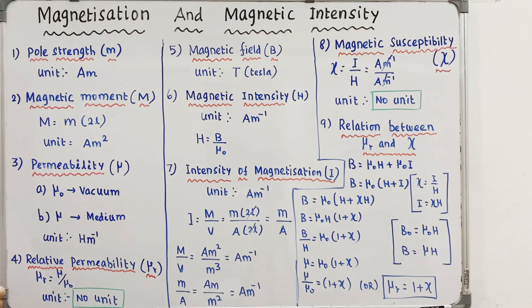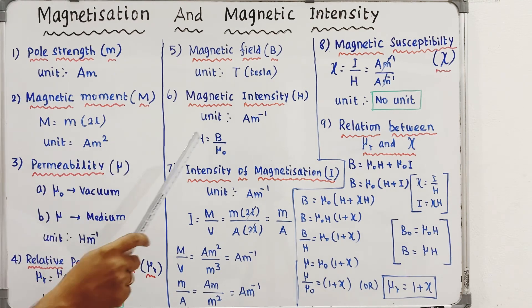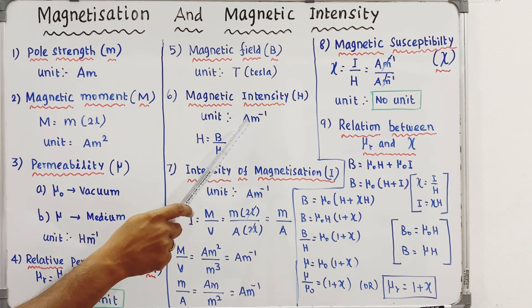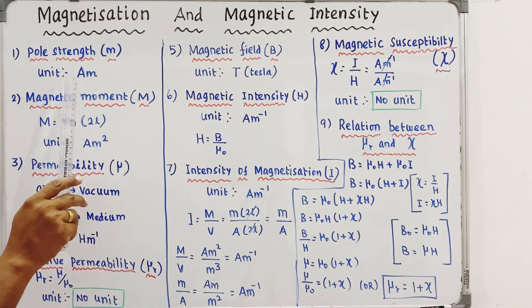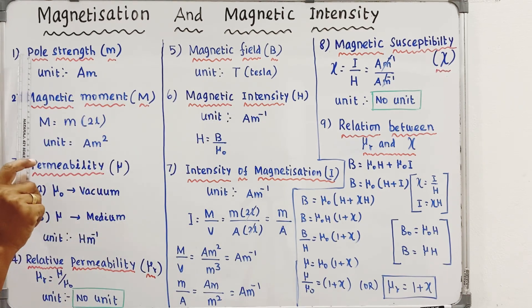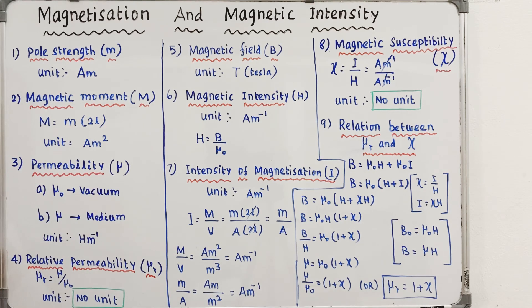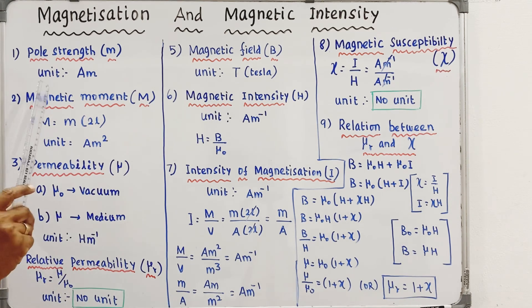First, you can use a bar magnet. The first concept is pole strength. Pole strength means a magnet has a north pole and a south pole — that is north pole strength and south pole strength. The unit of pole strength is Ampere meter.